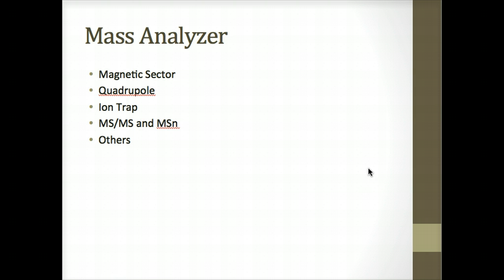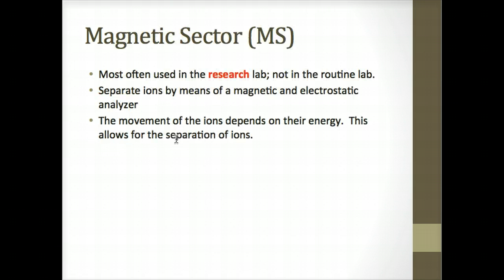So let's talk about mass analyzer for a second here. This is an outline showing the various types of mass analyzer typically used in mass spec: magnetic sector, quadrupole, ion trap. Then we'll talk about MS/MS in tandem, and MSN, and other analyzers. Just touching on them.